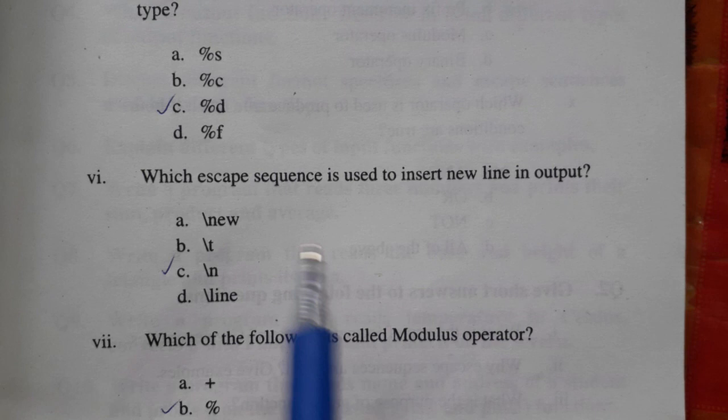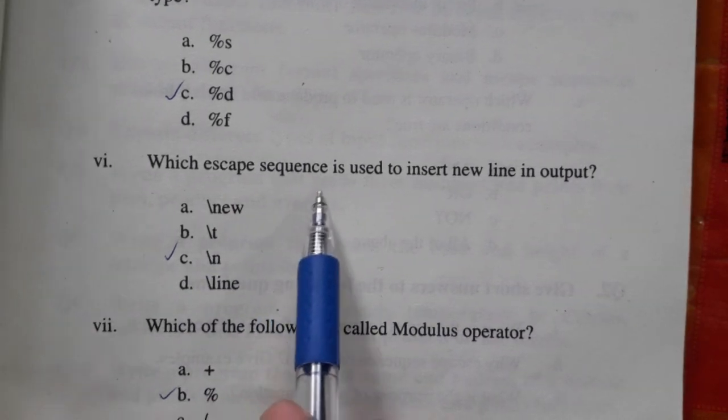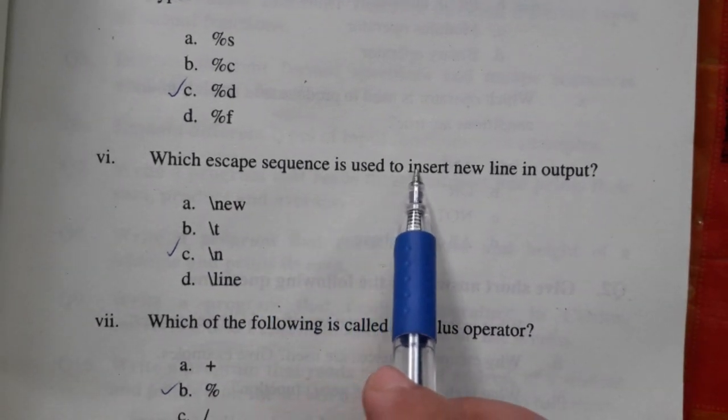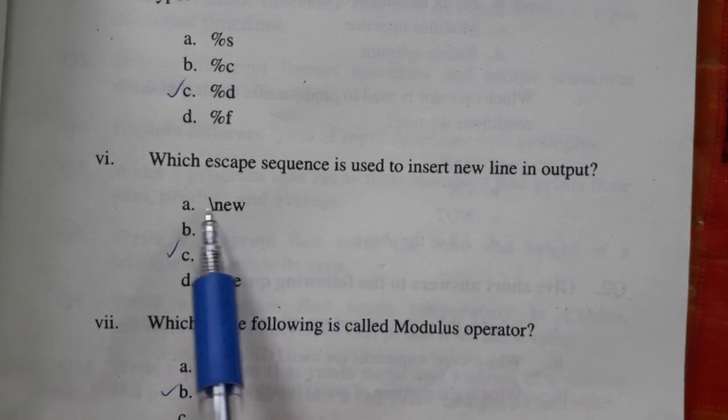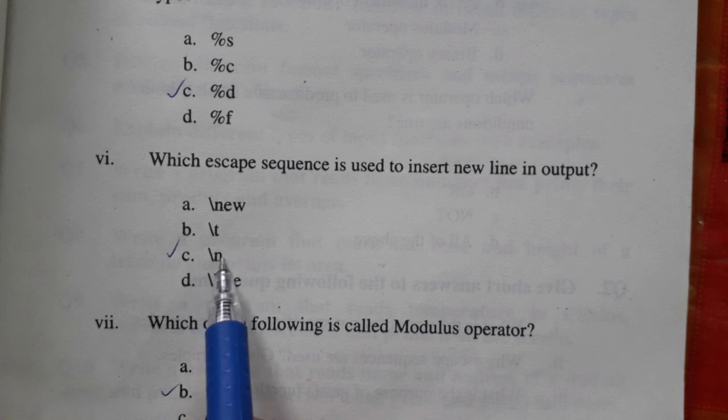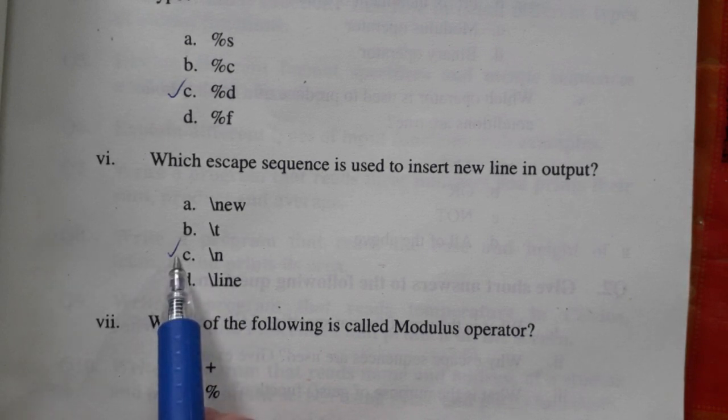Which escape sequence is used to insert new line in output? Backslash new, backslash T, backslash N, backslash line. The correct answer is backslash N.